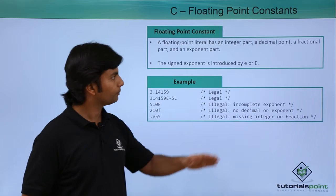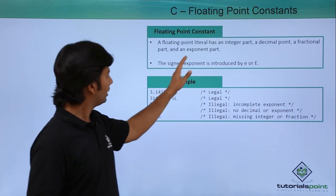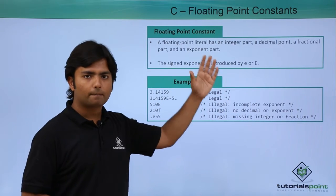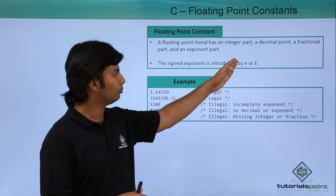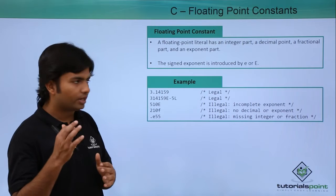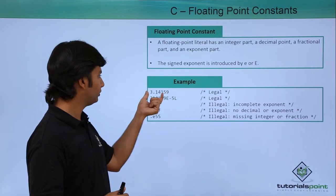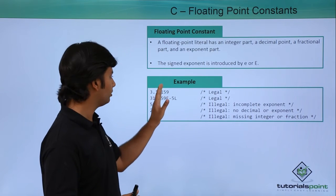It has a fractional part and an exponential part. The exponent is represented by small or capital E. Whenever you want to do that, here as you can see 3.159, that is a fractional number, a decimal number.